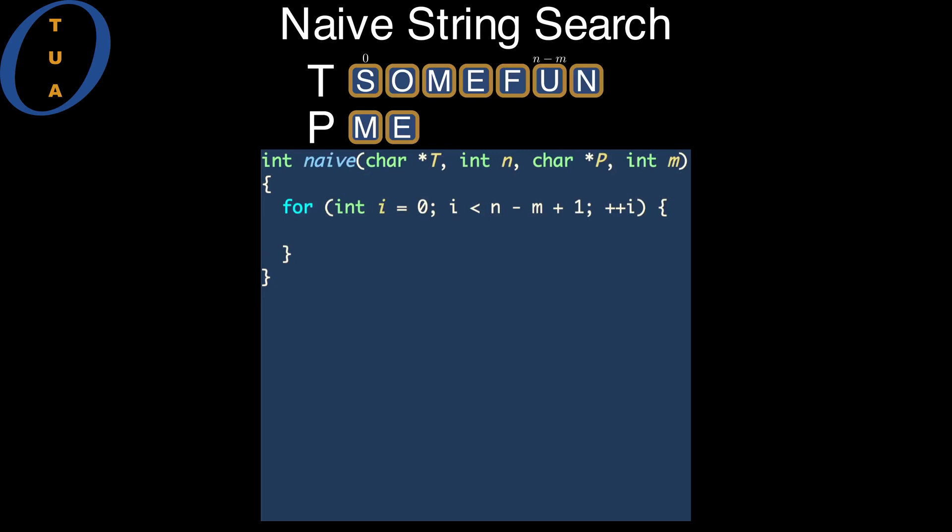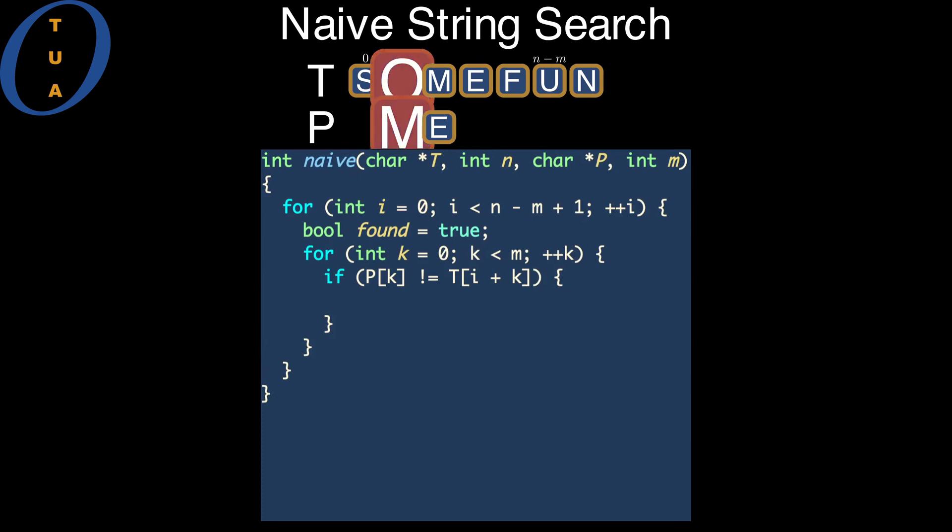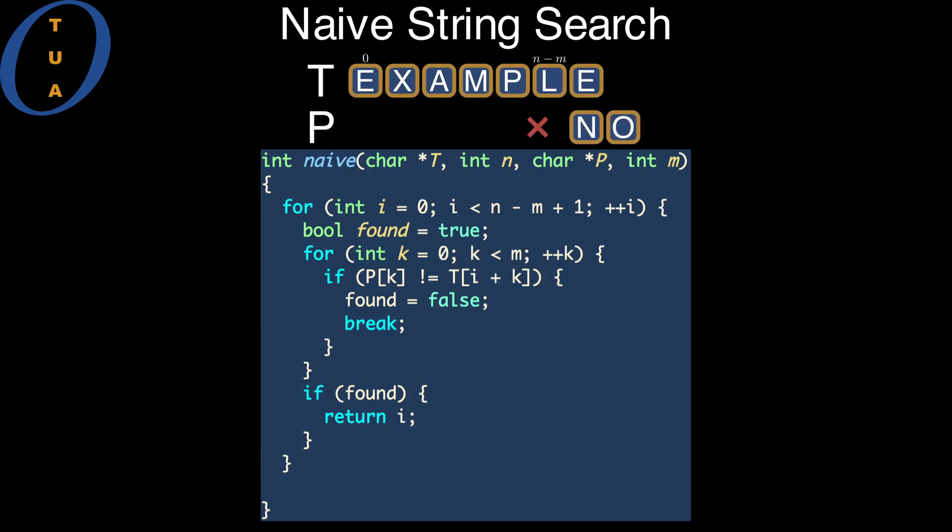We optimistically assume that the pattern is at the current offset. We check this by going one by one through all symbols in the pattern. If some symbol does not match, we continue to the next offset. If there is no offset where all symbols match, we return the special value minus one.